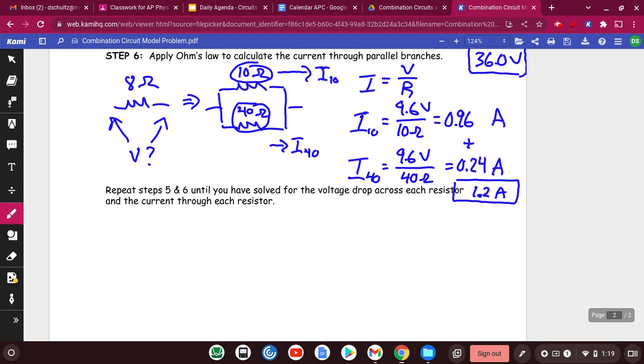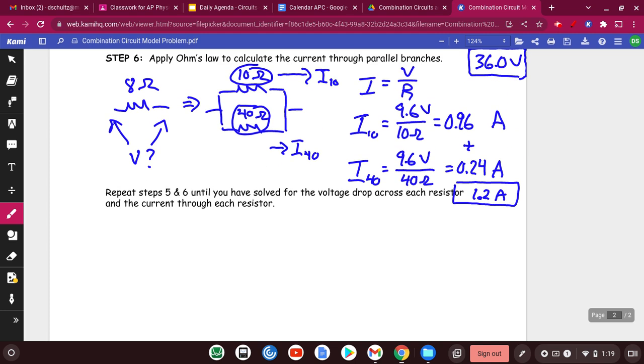And then it says, keep repeating these steps until you have solved for the voltage drop across each resistor and the current through each one. So let's see what we have left here. So we had at the beginning 5 ohms, we had 10 ohms here, we had 40 here, and then finally we had 17 ohms here.